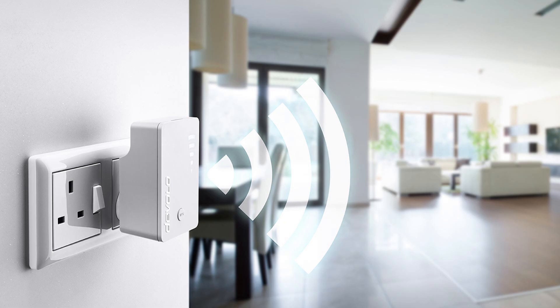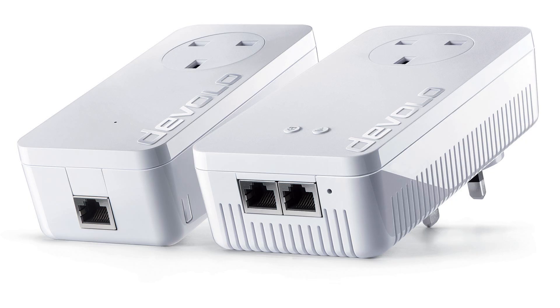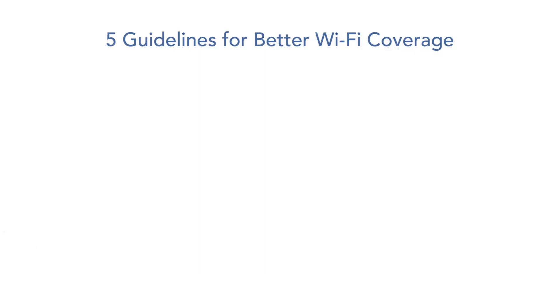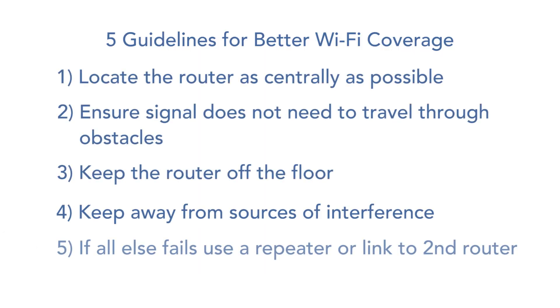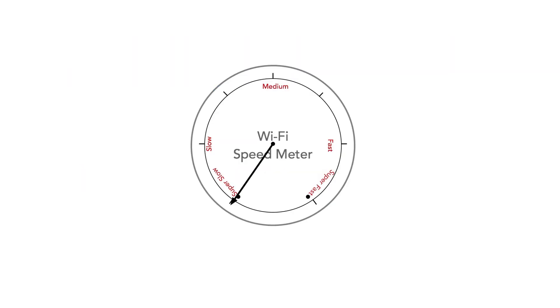Finally, if things are really bad in some locations in the home or office, there are still options like repeaters that pick up the signal and rebroadcast it, or better still a power line link to a new access point. So there we have it — five simple guidelines. You may need to experiment a bit, but we hope that they will help you get the best Wi-Fi coverage that you can from your router.